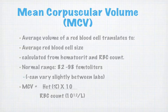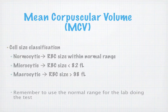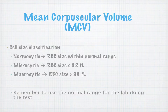Mean corpuscular volume (MCV) is the average volume of a red blood cell, translating to average red blood cell size. It's calculated from the hematocrit and total red blood cell count, with a normal range in femtoliters. The formula is: hematocrit (%) × 10 ÷ RBC count = MCV. Cell size classifications: normocytic (normal range), microcytic (small), and macrocytic (large).